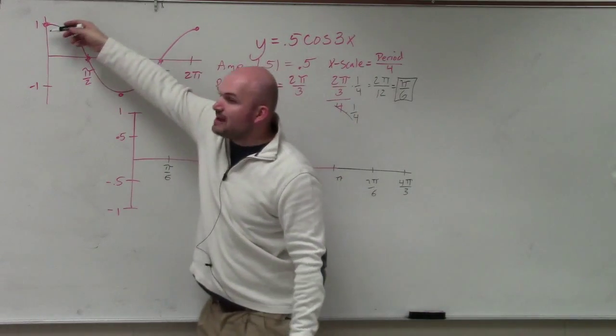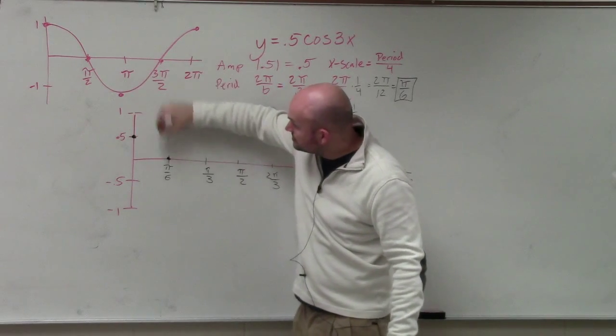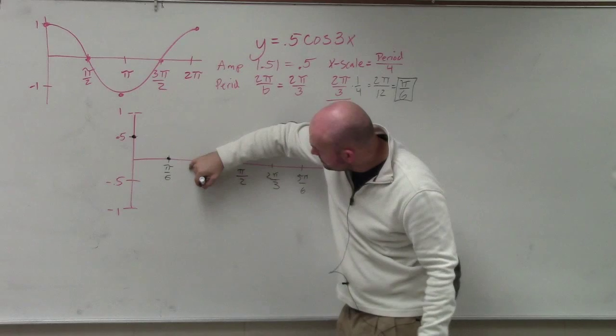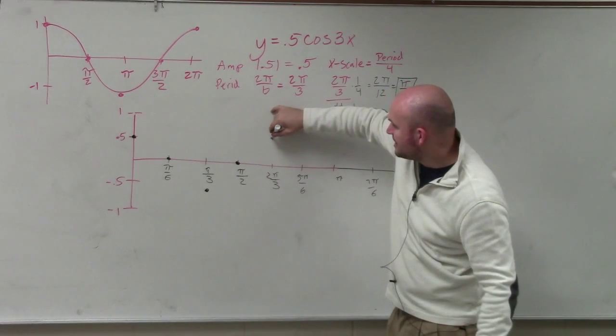Cosine starts at the maximum for the initial period. The next critical point is the x-intercept, then the minimum at negative 1, then back to the x-intercept, and then up to its maximum.